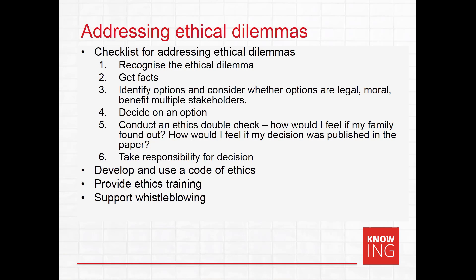So how might organisations help people to address ethical dilemmas appropriately? There are a few different strategies that work with varying degrees of success. First, developing a checklist as a framework for making ethical decisions can be helpful. The first step is to recognise that there is an ethical dilemma — diagnose the problem. Second, ensure the decisions are based on facts, which helps not only in making the decisions but demonstrating on what basis you made them.